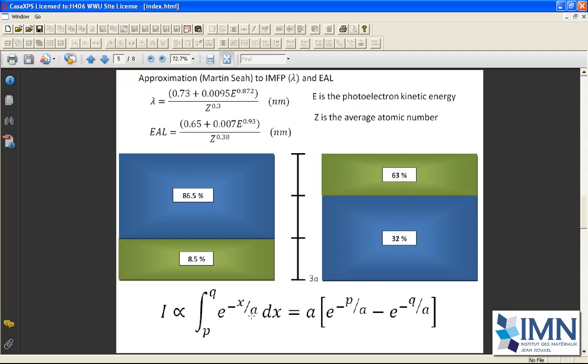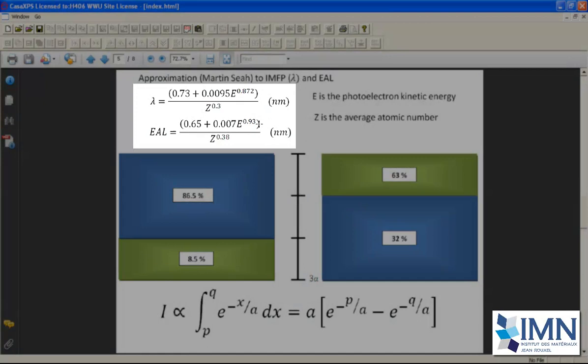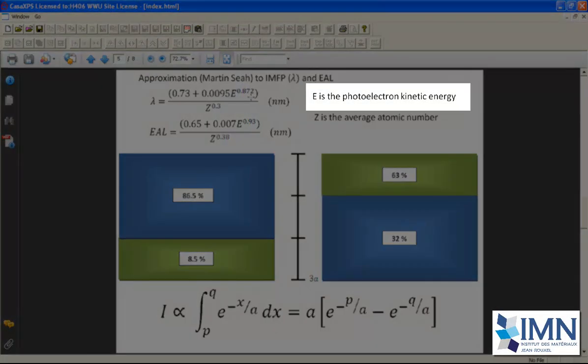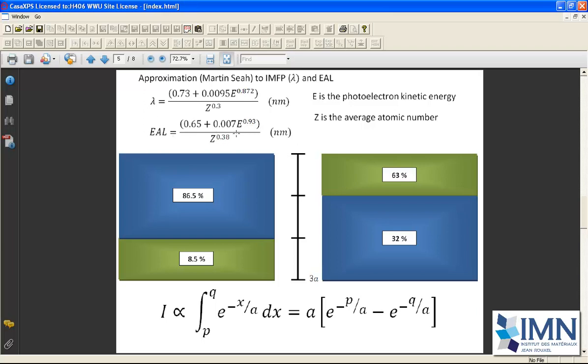What happens is that this parameter a varies as a function of the kinetic energy, and here we have two formulae that estimate the attenuation length. One is based on the inelastic mean-free path, and the other is an effective attenuation length, and both are designed to try and measure the depth from which electrons can emerge from a sample. So we have an energy dependence, and therefore a peak that appears at a different kinetic energy from another peak will have a different attenuation, and so this must be part of any quantification of XPS spectra.